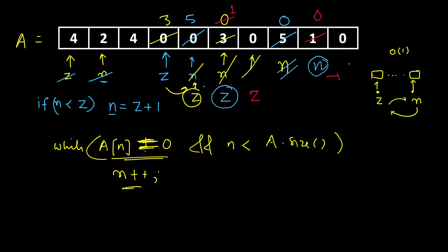When we look for the next non-zero element but n reaches the end of the array, the condition is violated and the loop terminates — no more swapping. The final result is four, two, four, three, five, one, then the remaining zeros.